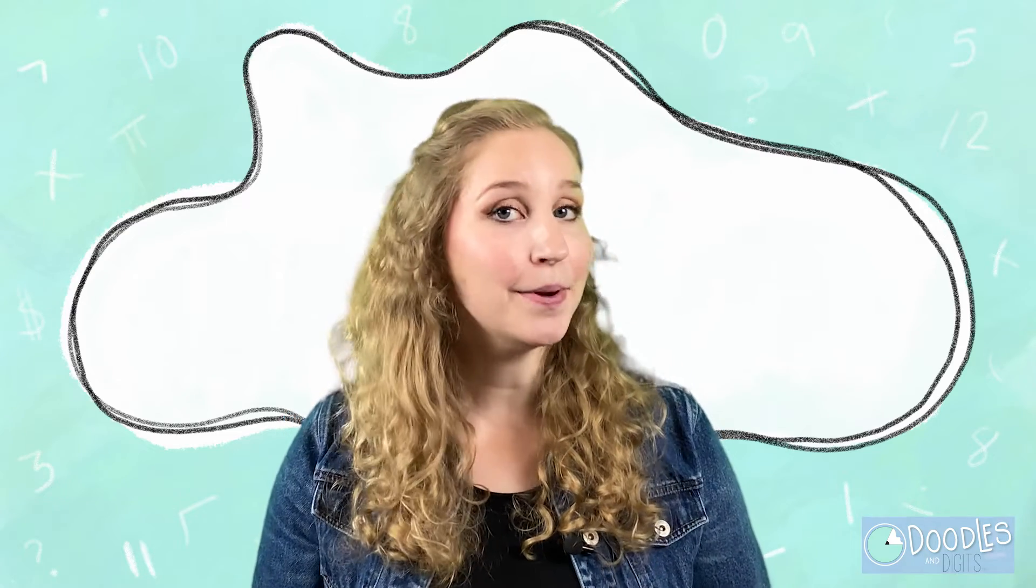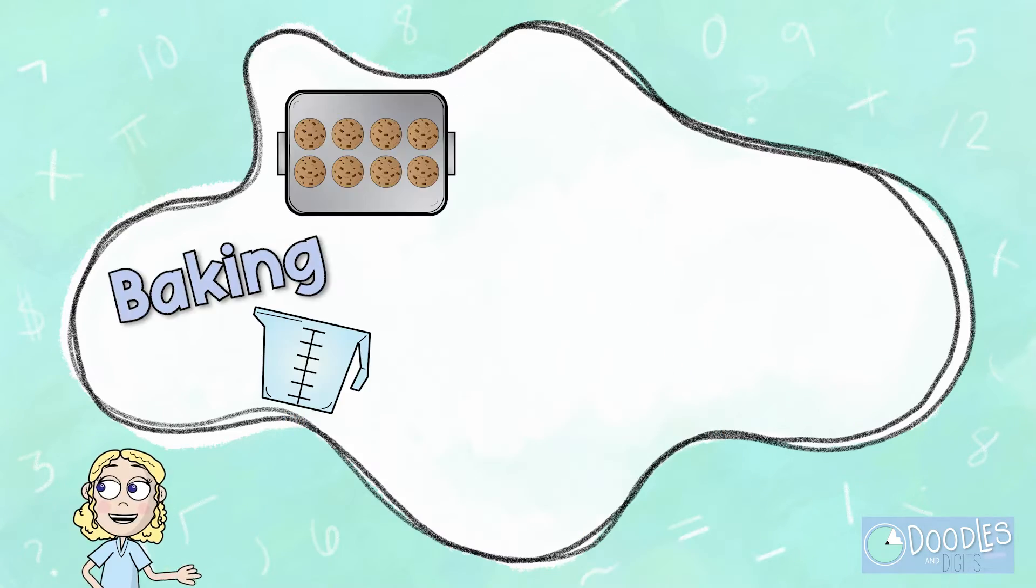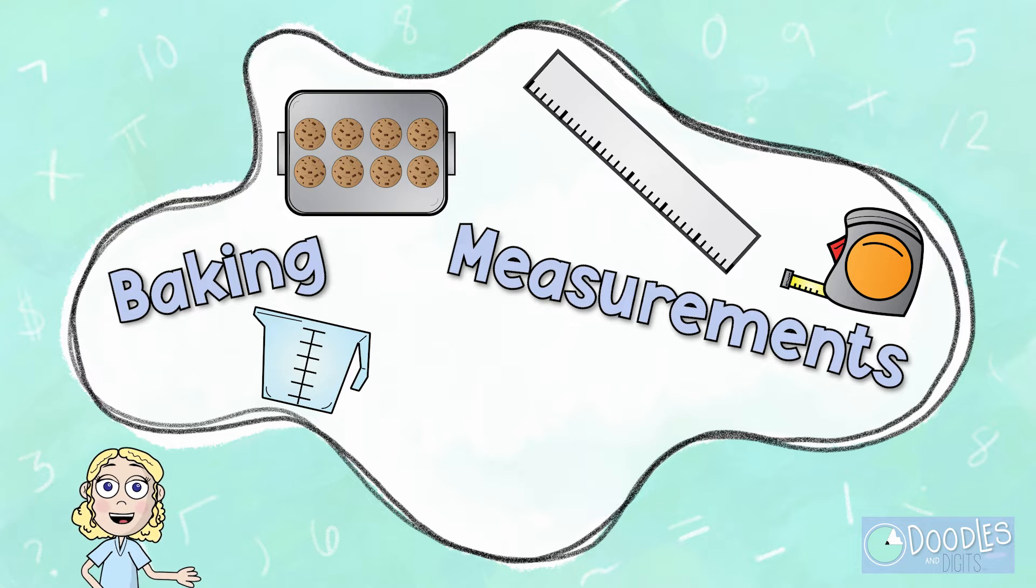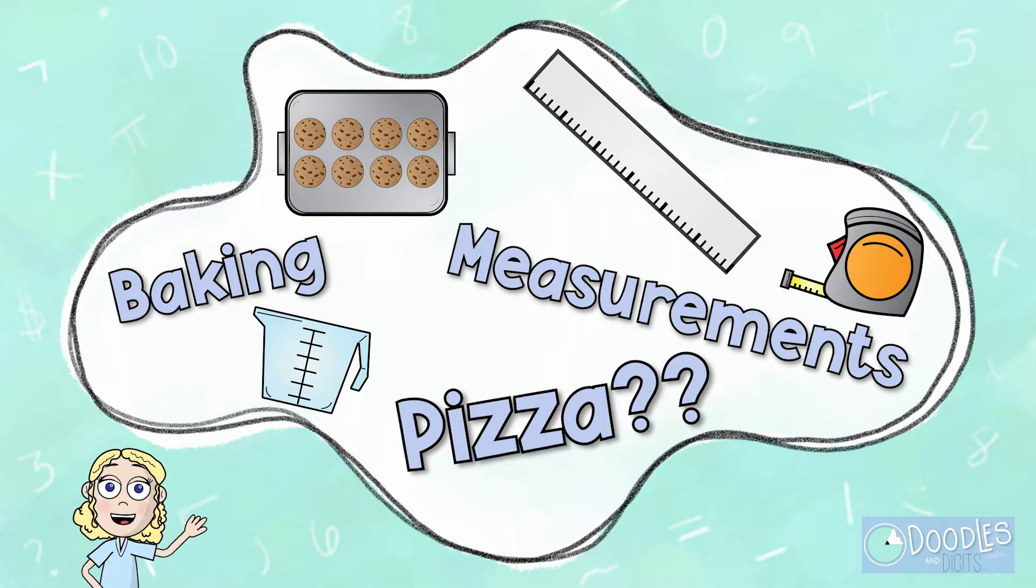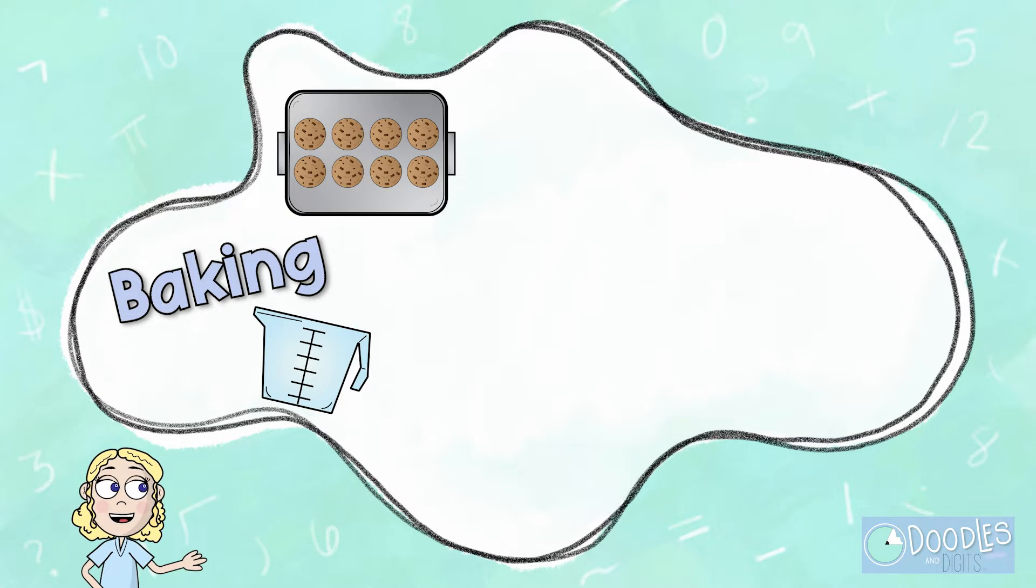Where do we see mixed numbers in real life? We see mixed numbers all the time in real life. You might see mixed numbers when it comes to measurement. You might also see mixed numbers when we're cooking or baking. Finally, we use mixed numbers a lot in everyday language.